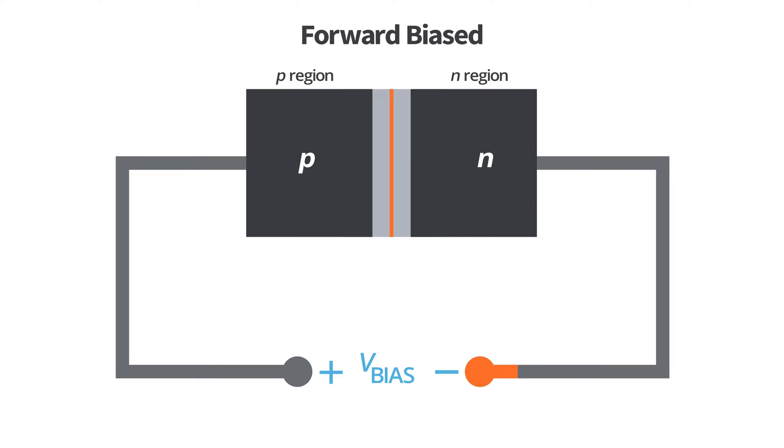If you remember, the negative side of the external bias voltage must be connected to the N region and the positive side to the P region in order for a diode to be forward biased. Now, for a diode to be reverse biased, the external bias voltage must be connected opposite of how it was connected to a diode in forward bias condition. So the positive side is connected to the N region while the negative side is connected to the P region.